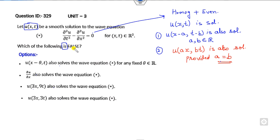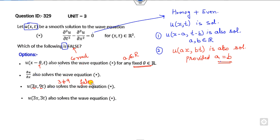Now look at the options — your target is to find which one is false. Option with (x minus theta): theta is a fixed number, a constant, like a and b belonging to ℝ, so u(x minus theta, t minus 0) is also a solution — this is a correct statement, but we need the false one. For u(ax, bt) to solve the problem, we need a equal to b. Here, 3 is not equal to 9, so this is the false statement. Therefore, this is the correct answer — option C.